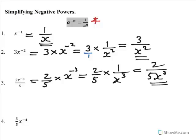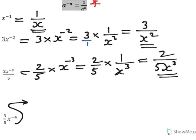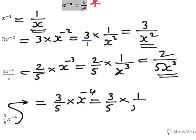This is example number 4, which I'd like to do here. We need to think of it as 3 fifths times x to the minus 4. It's obvious really, which is 3 fifths times n is 4, so it's 1 over x to the 4.